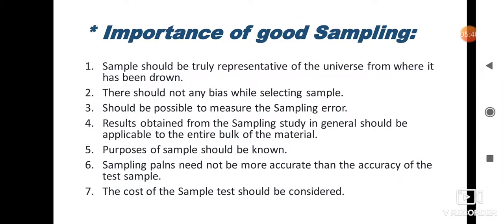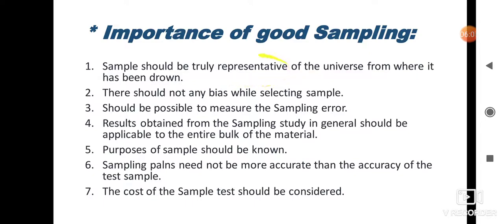Now we will move towards the importance of good sampling. First, the sample should be truly representative of the universe from where it has been drawn — that means it consists of all essential properties. Second, there should not be any bias while selecting the sample.